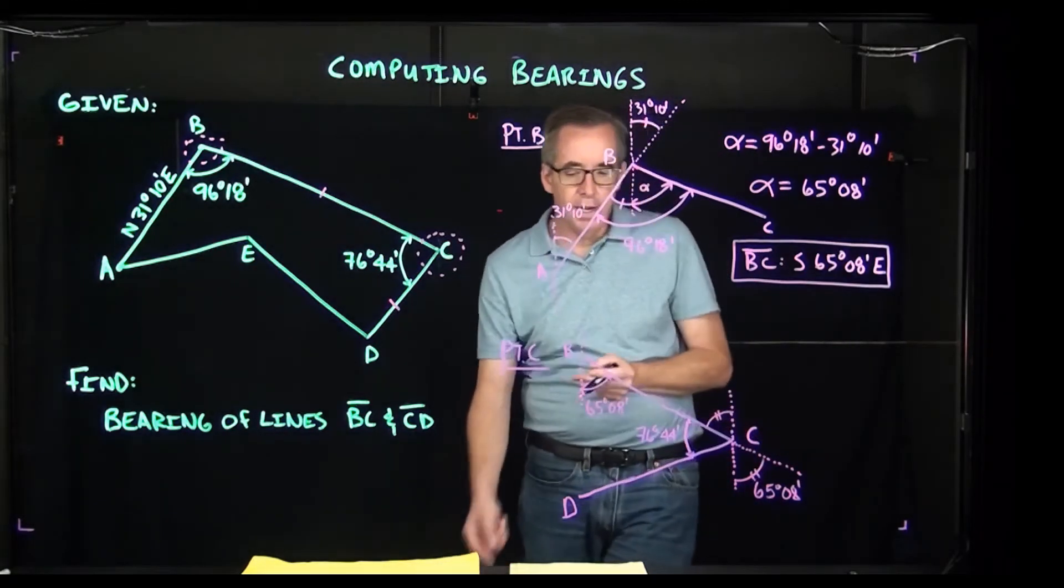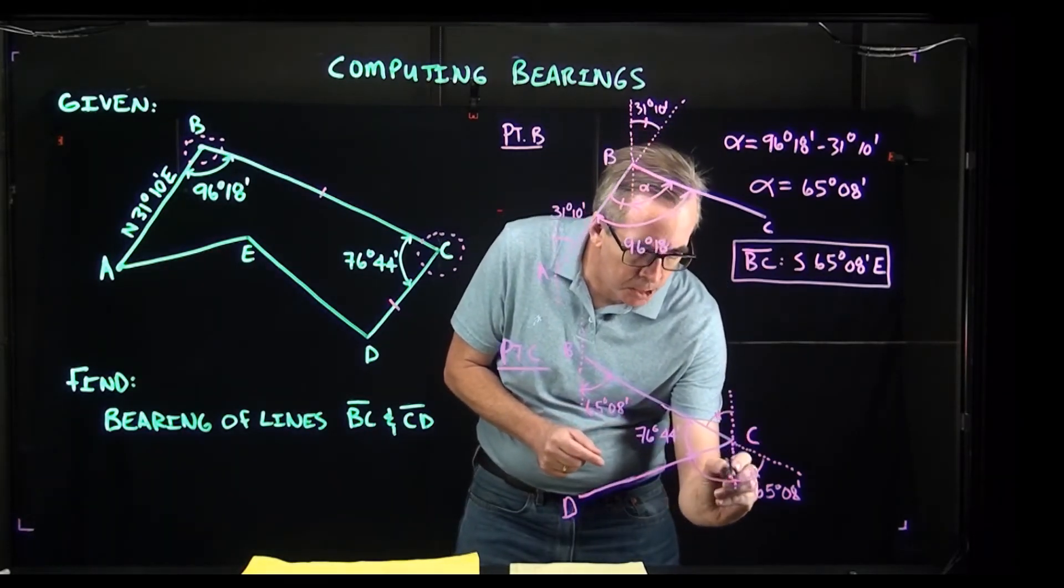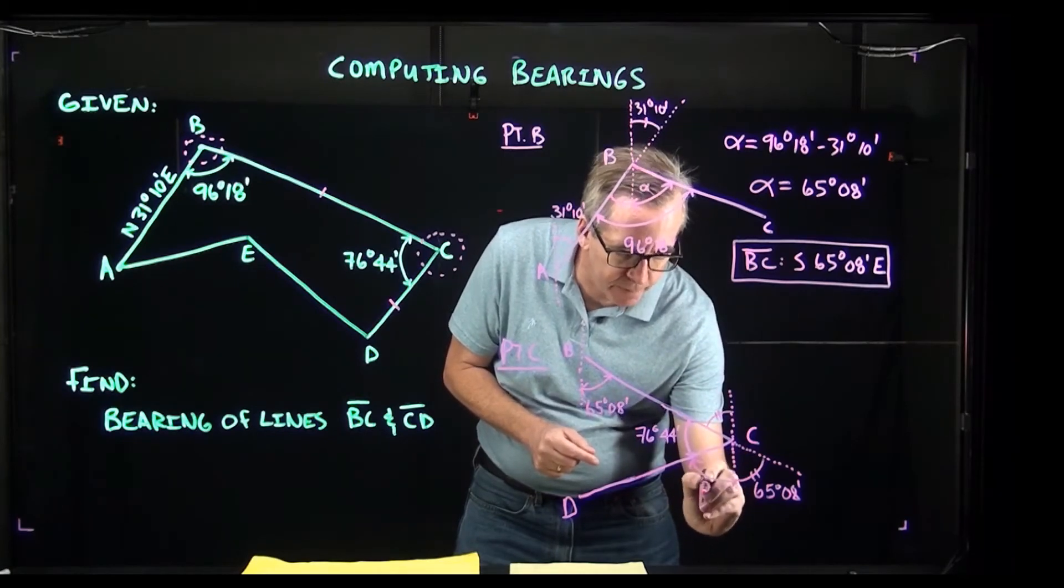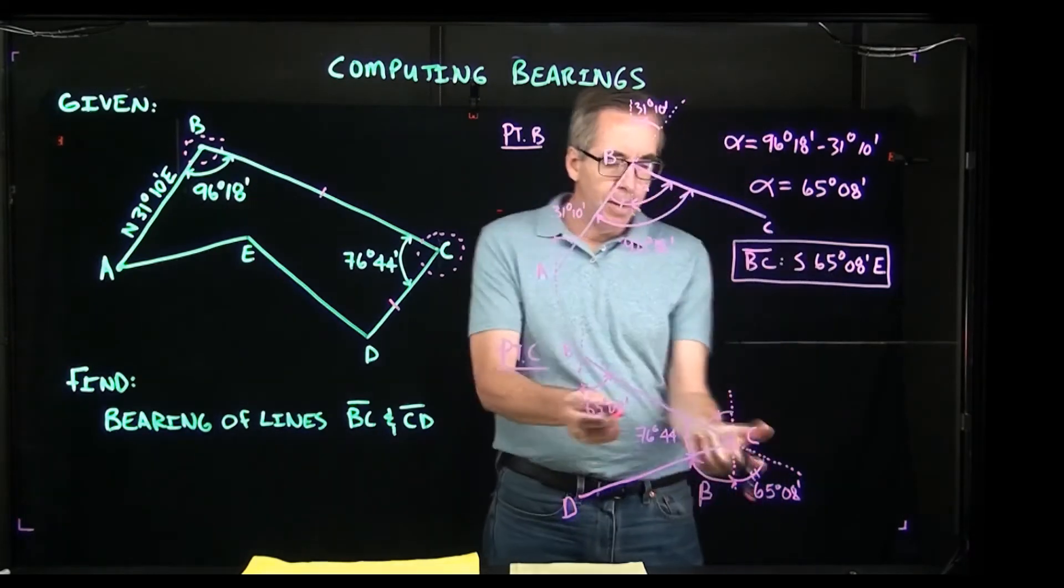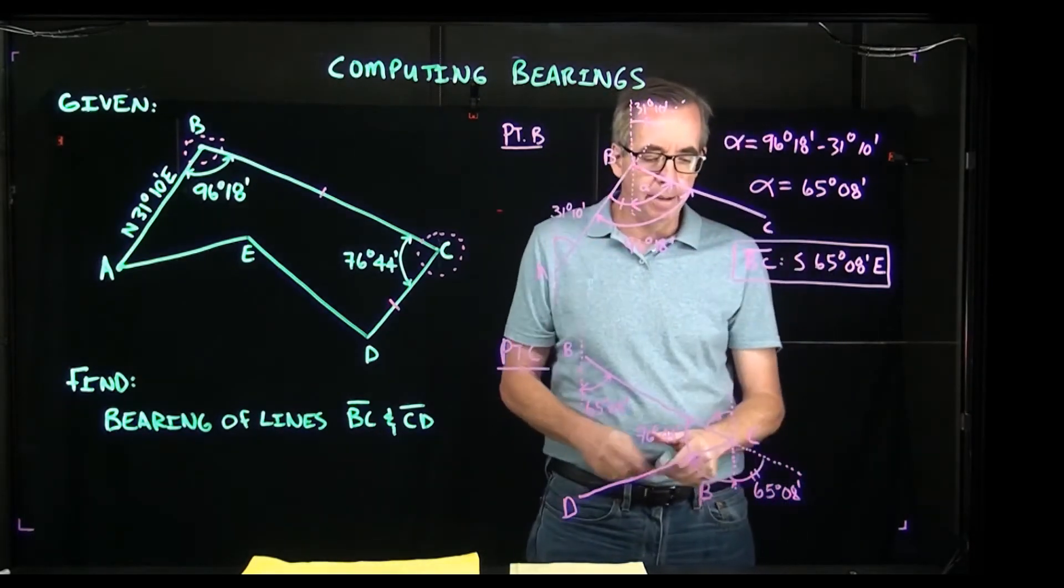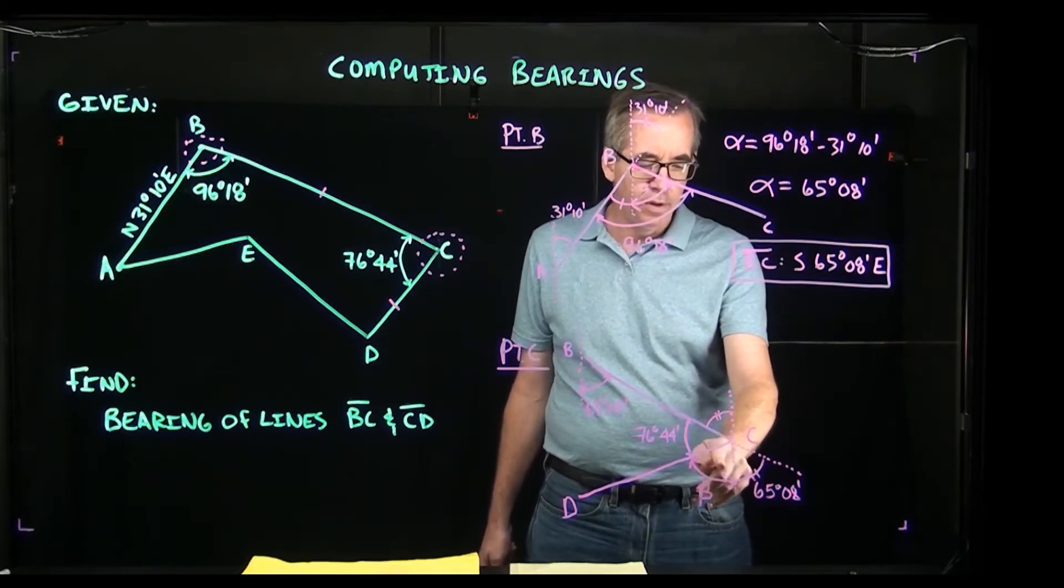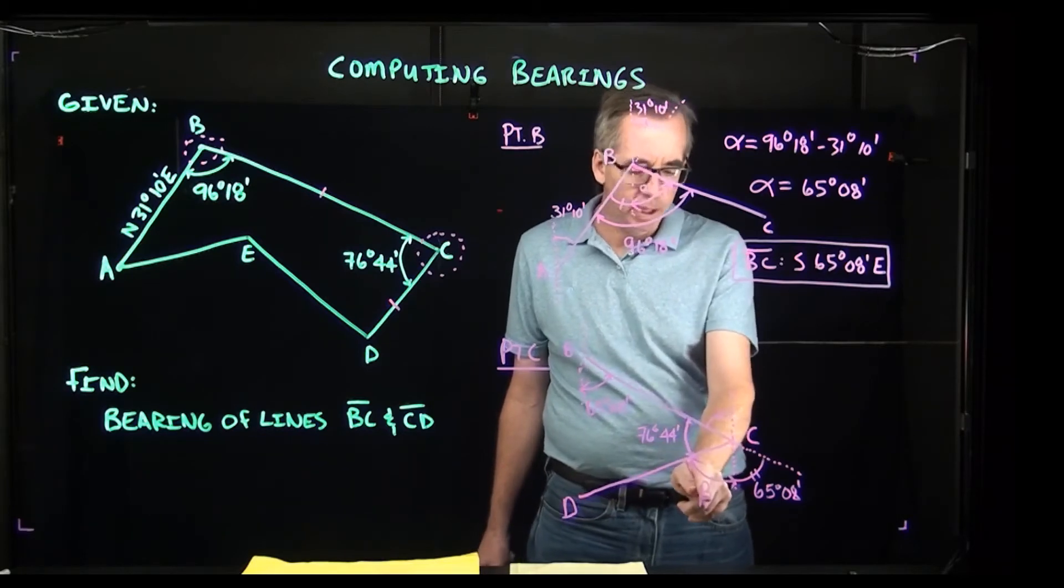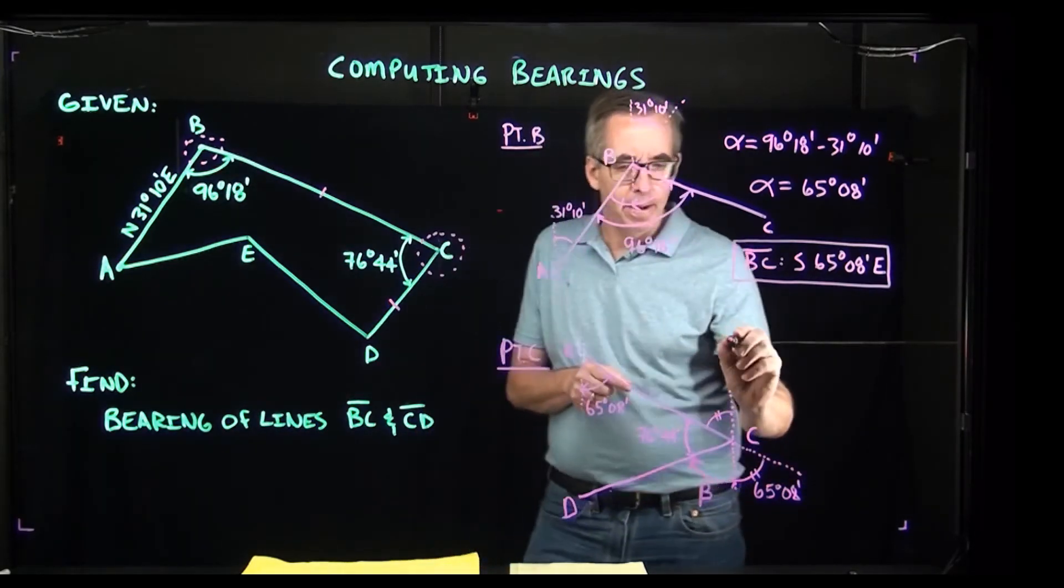Now what I'd like is I would like to get this angle here, which I'm going to call beta. I'm not very original with my names, so these are alpha and beta, but we'll keep it simple. The reason I want that angle is I can see that I'm going to have a bearing of south so many degrees west for C to D, so that so many degrees is going to come from beta. So we need to calculate beta.